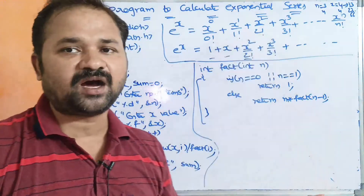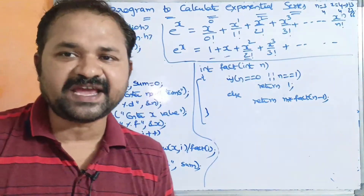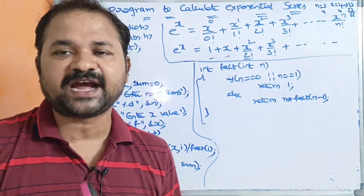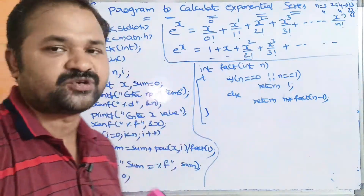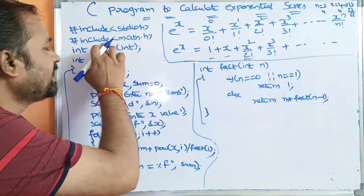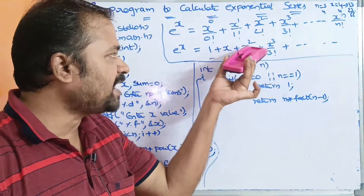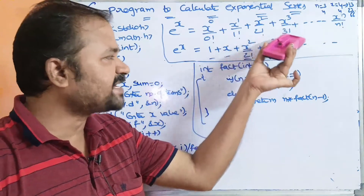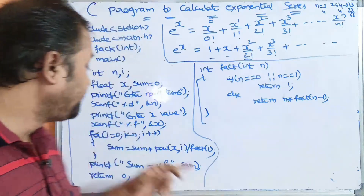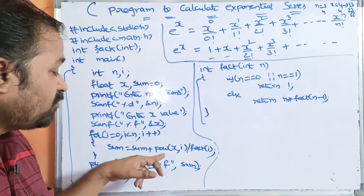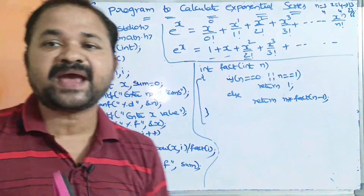Now let us see the program. The first statement is #include stdio.h, because it contains printf and scanf functions which we are using in this program. The next one is #include math.h, because here we have to calculate x power 2, x power 3, x power 4, x power 5, and for that we can use the POW function. The POW function is available in the math header file.